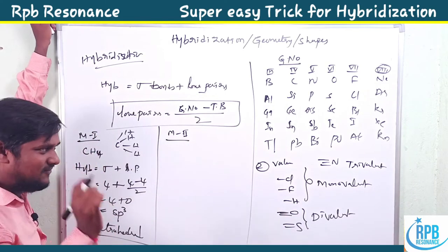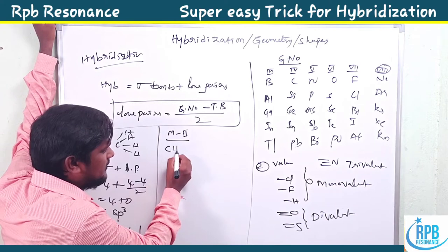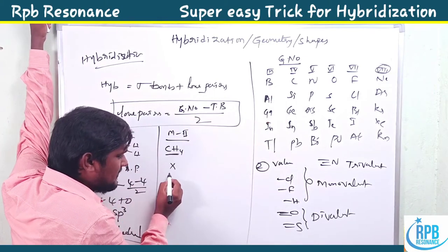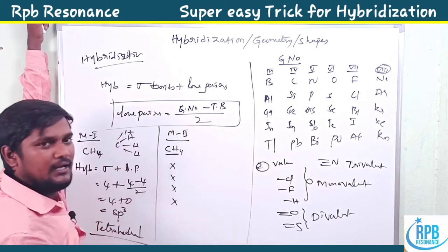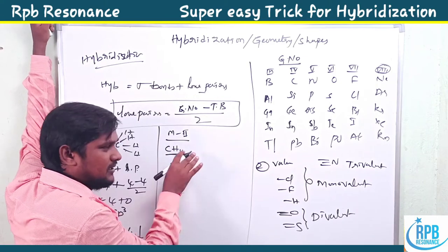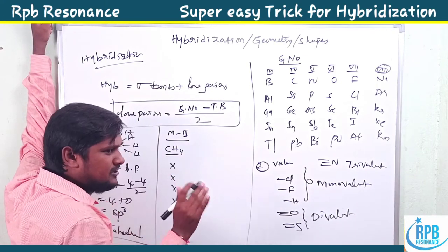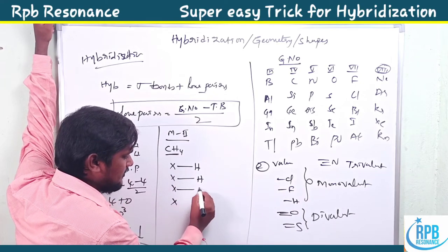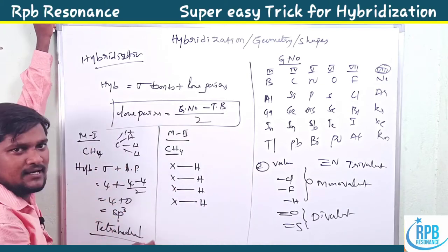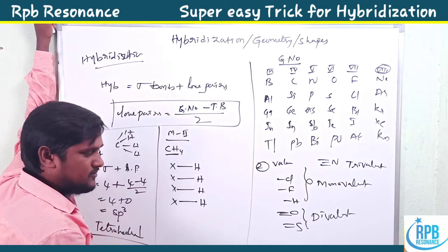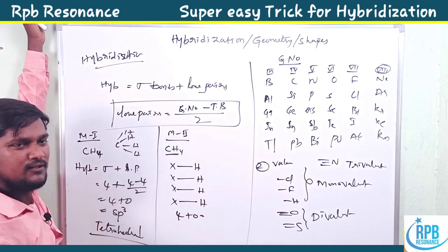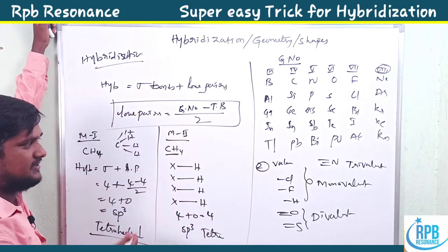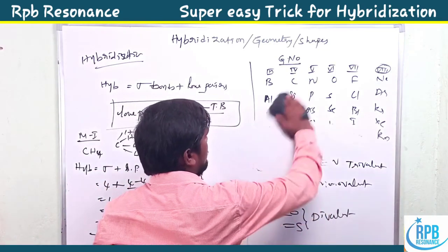In method two — the very simple trick — for CH4, the central atom carbon has group number four, so draw four cross marks. Each cross mark is shared by one hydrogen's valency electron: first, second, third, fourth hydrogen. All valency electrons are shared by the four atoms, giving four plus zero equals four — sp3 tetrahedral. It is a very simple trick.